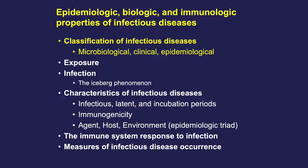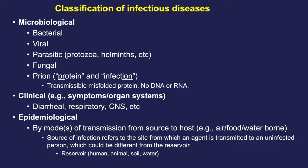There are many different ways to classify infectious diseases. For our purposes, we'll be concerned with microbiological, clinical, and epidemiological classifications. Microbiological classification refers to the type of agent: bacteria, virus, parasite, fungus, or prion. Clinical classifications refer to the type of symptoms and organ systems affected. Influenza, for example, is a respiratory virus. Coronavirus was initially classified as a respiratory virus too, but we've come to learn it affects almost every organ system. Epidemiological classifications refer to the mode or modes of transmission, and also the reservoir of the agent — the natural habitat where it lives, grows, and multiplies in nature.